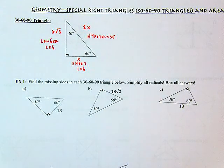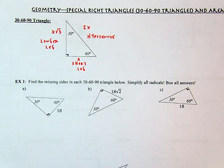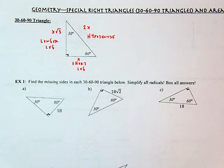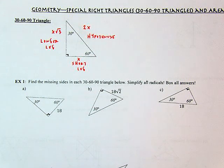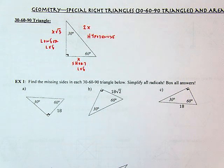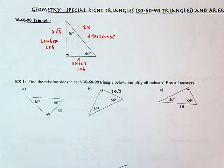Any 30-60-90 triangle will be similar to any other 30-60-90 triangle. Similar means we have the same shape but different sizes — scaling up, enlarging, or reducing. For similar shapes, corresponding angles are congruent, but corresponding sides are proportional — same ratio — and that's how we get this pattern. So my short leg opposite the 30 is x, the longer leg opposite the 60 is x root 3, and the hypotenuse opposite the right angle is 2x.